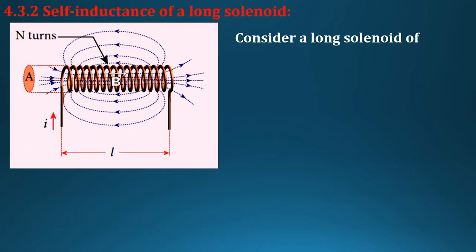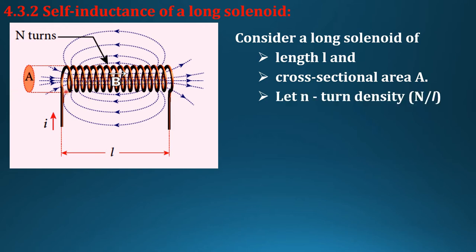Consider a long solenoid of length L and cross-sectional area A. Let n be the turn density, that is number of turns divided by the length, and I is the current flowing through the circuit.